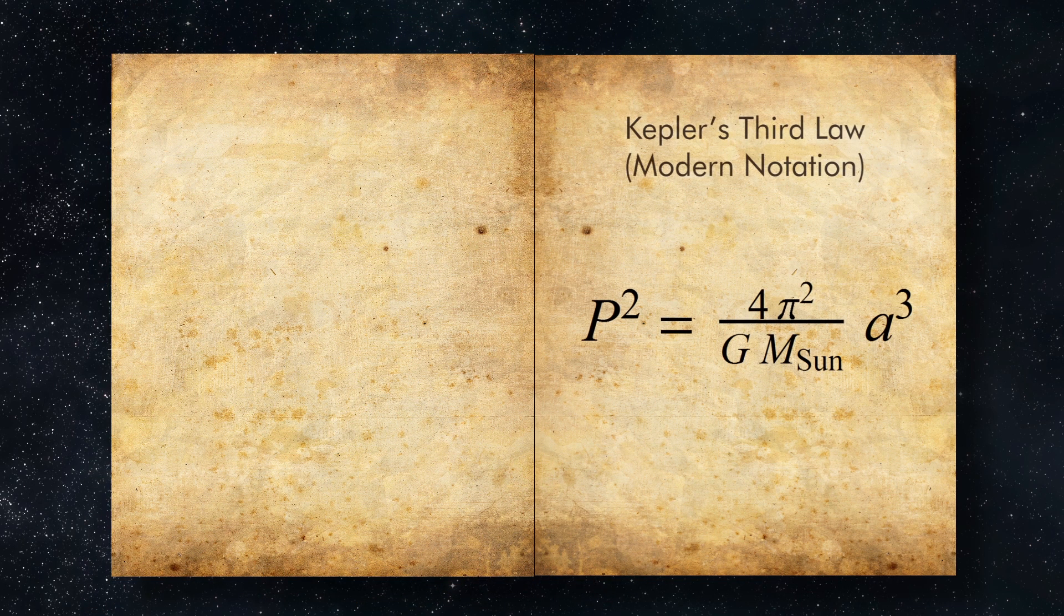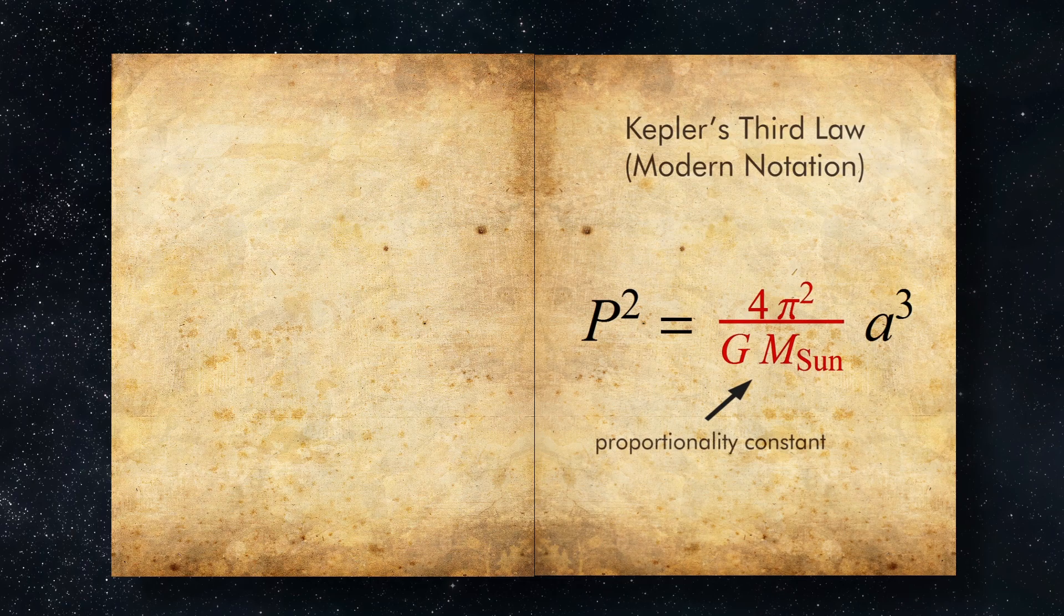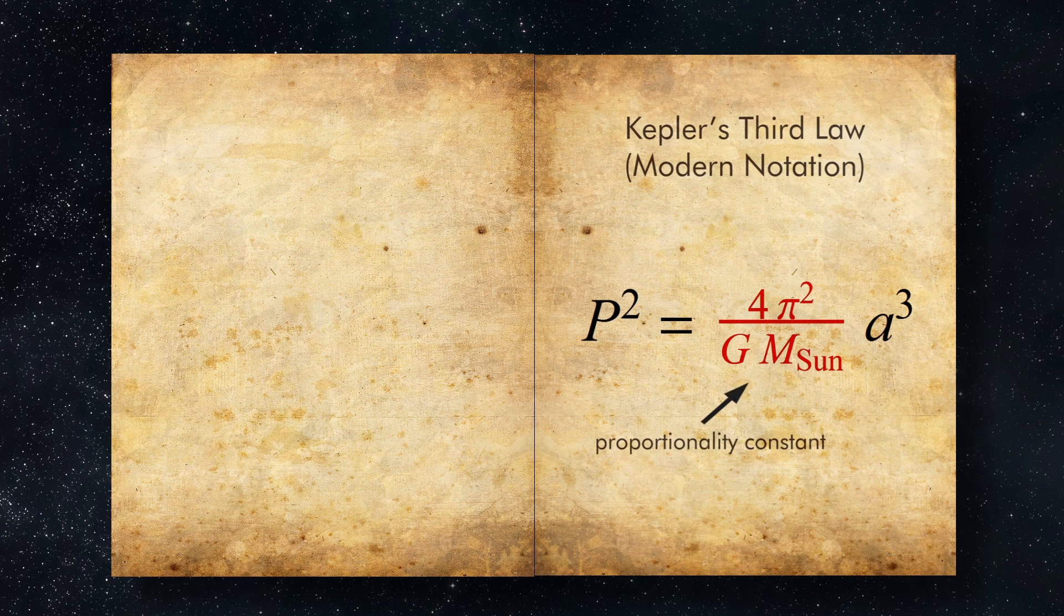Then we have to unpack Kepler's equation a little bit more. In modern notation, it becomes p squared equals 4π² over G, the gravitational constant, times m_Sun, all multiplied by a to the third power. That term before the a cubed is the constant of proportionality in Kepler's original equation.